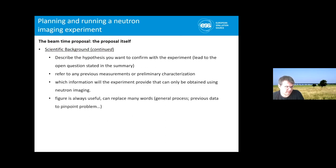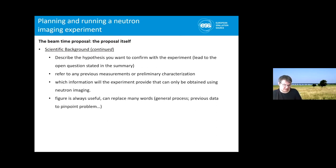Typically include some scientific background to set the scene for your research topic. Reviewers most likely are not experts in your specific scientific field, so it should be easy enough to understand what you're doing, trigger their interest, and indicate the fundamental scientific and societal importance of your work. Describe any hypothesis you want to confirm, and make clear which information can only be obtained using neutrons.